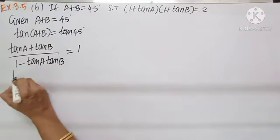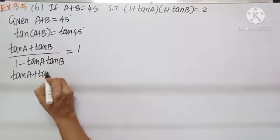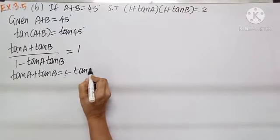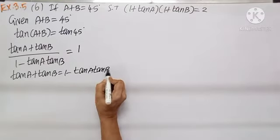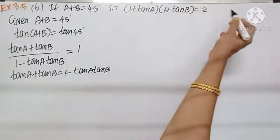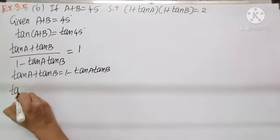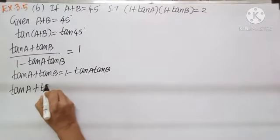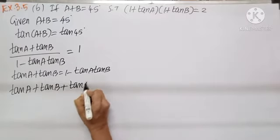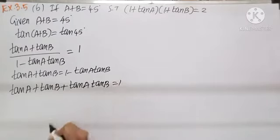Cross multiplying, we get tan A plus tan B equals 1 minus tan A tan B. The right hand side has no tan, so bringing all terms to the left: tan A plus tan B plus tan A tan B equals 1.